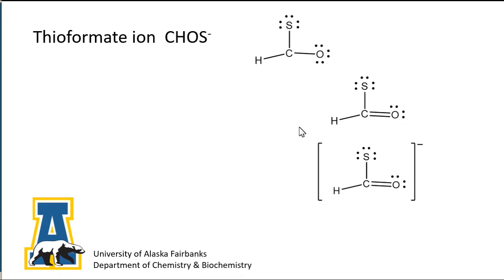However, if we use one lone pair from sulfur instead of oxygen, we draw another formula, one that still has all octets but now contains a carbon-sulfur double bond and oxygen has the minus one formal charge.